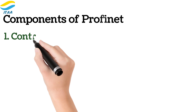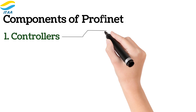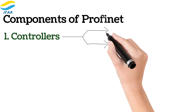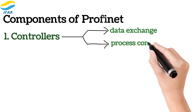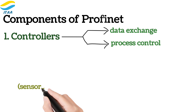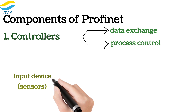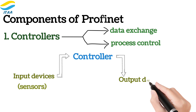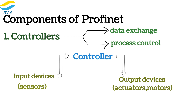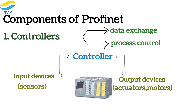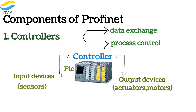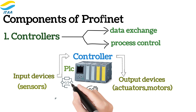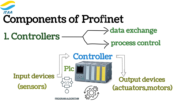Controllers are the brains of the operation. In a PROFINET network, controllers manage and control data exchange between devices and provide process control. They interpret data coming from sensors and input devices, then send commands to output devices such as actuators, motors, and other machinery. Commonly referred to as PLCs — programmable logic controllers — these controllers are the central hubs that ensure real-time decision making. They also store configurations and handle complex algorithms that optimize processes on the production floor.